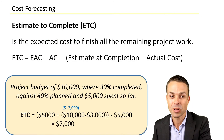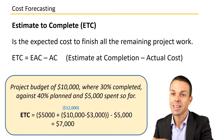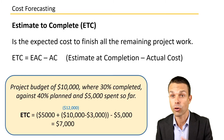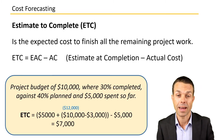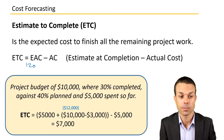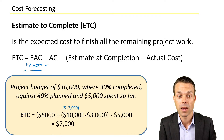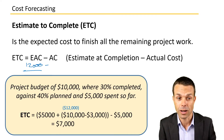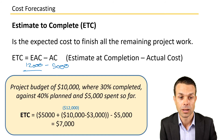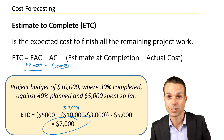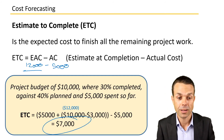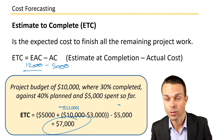Now we're up to the Estimate to Complete. This is the expected cost to finish all the remaining project work, and it equals our Estimate at Completion — which we said is twelve thousand — minus our Actual Cost so far, which is five thousand. So this one is nice and easy: twelve thousand minus five thousand equals seven thousand dollars.